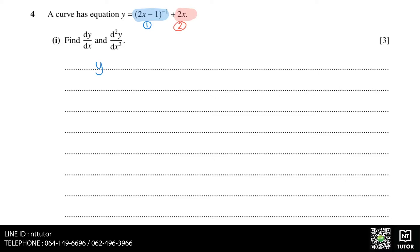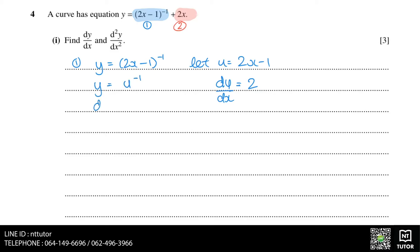When differentiating y equals 2x minus 1 to the power of minus 1, we can use the chain rule by letting u equals 2x minus 1. Then du over dx, which is the differentiation of u with respect to x, equals 2. With this value of u, y now equals u to the power of minus 1, and we can differentiate y with respect to u — dy over du — which equals minus 1 times u to the power of minus 2.